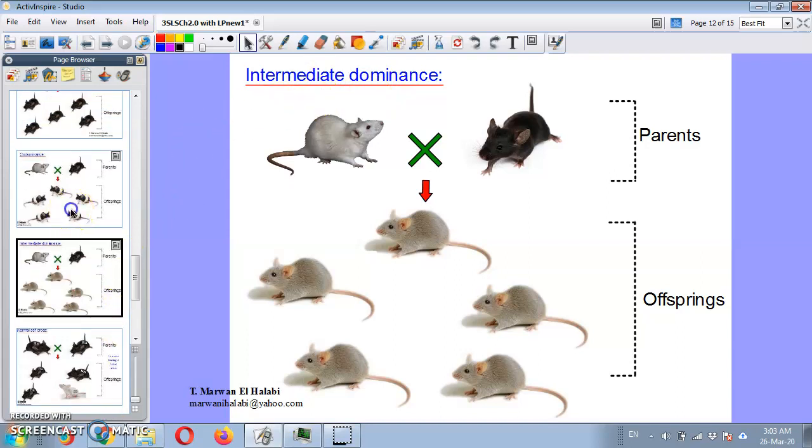However, in the intermediate dominance case, when crossing a black mouse with a white one, all the offsprings in a pure cross will be uniform exactly as that of the previous ones. But a new color, a new intermediate color appeared on the offsprings. So when crossing black with white gave gray, which is an intermediate color between black and white. So it is the case of intermediate dominance. And both of them, which are the codominance and intermediate dominance, are cases of the non-dominance crosses.